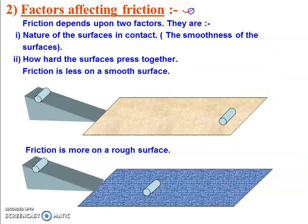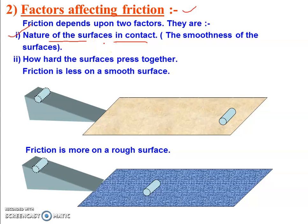Now, factors affecting friction. What are the factors which affect friction — which increase or decrease it? Friction depends on two factors. Number one: the nature of the surfaces in contact, meaning the smoothness or roughness of the surfaces of the two bodies which are in contact.